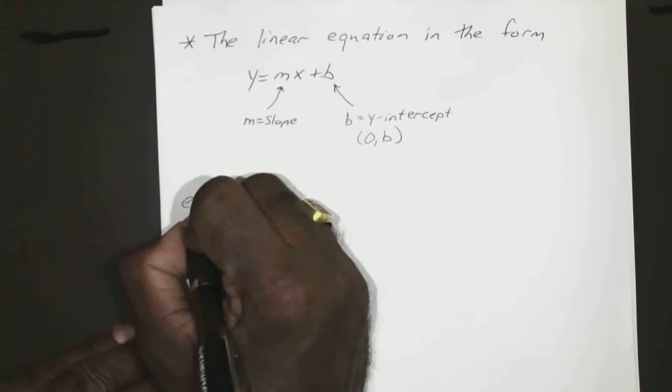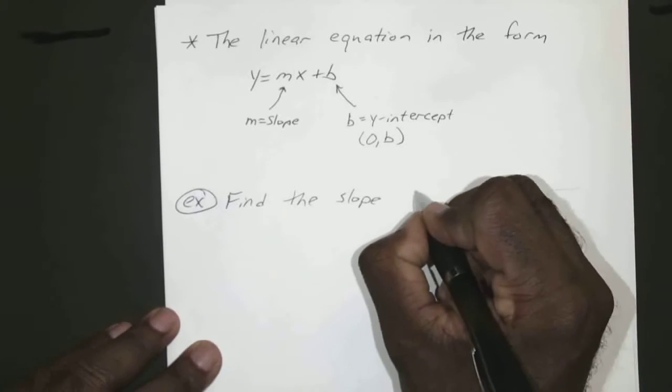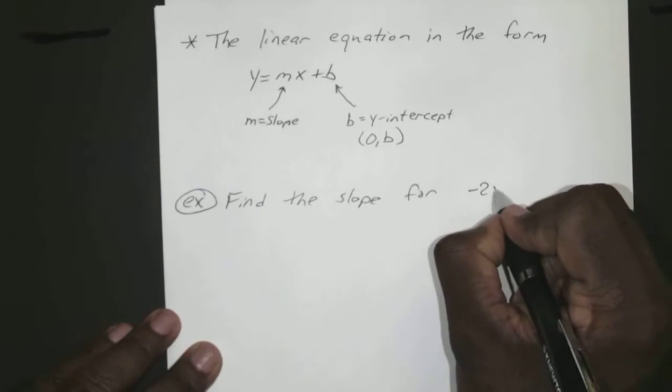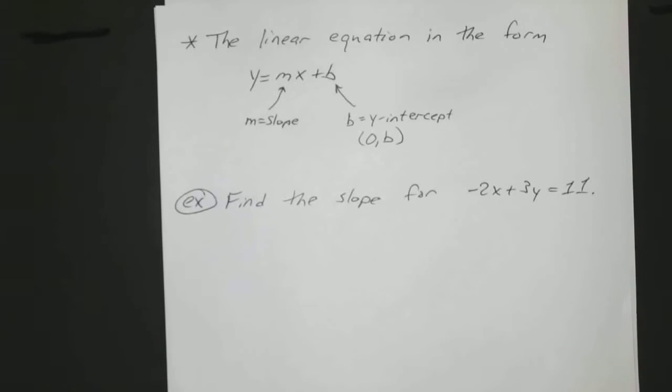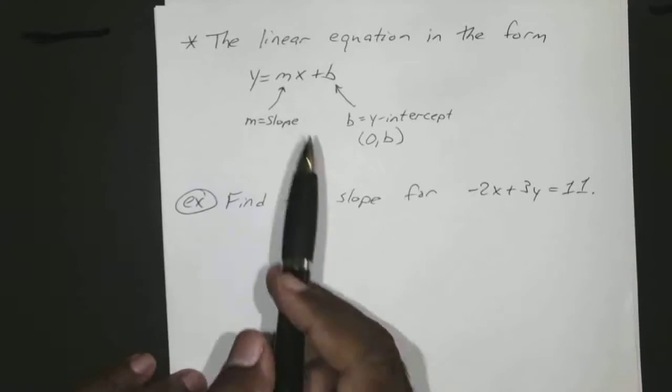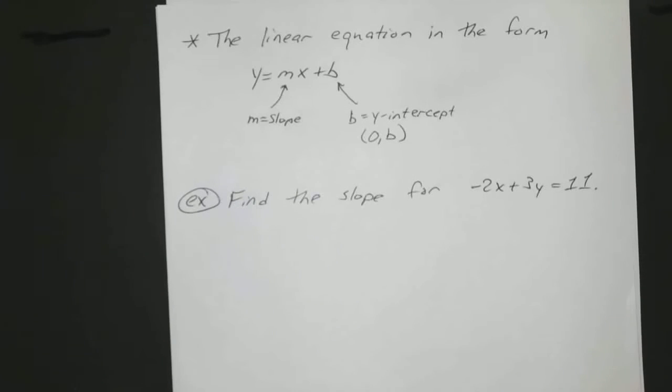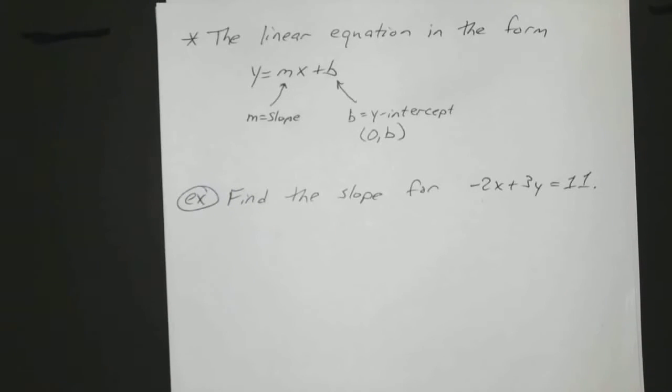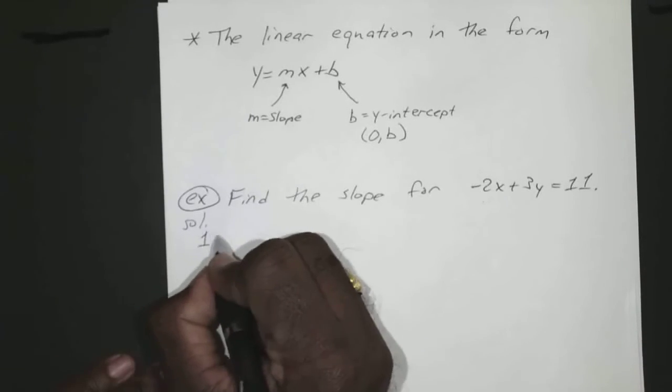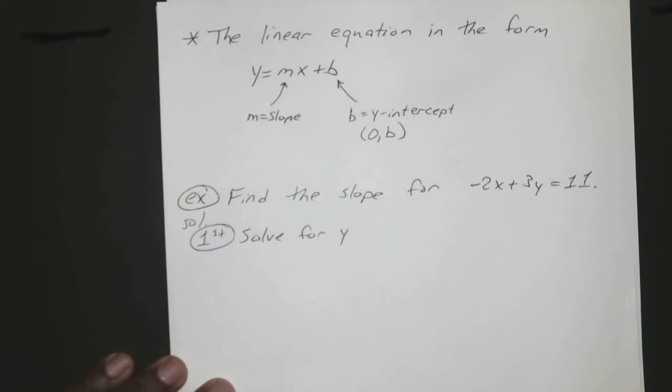Okay, so let's say for example if you wanted to find the slope for negative 2x plus 3y equals 11. Now we see here the slope is the value right next to your x, that coefficient. But the only thing is you have to make sure you solve for y first. So if you came and said the slope was negative 2, it would have been incorrect. You have to solve for y first, and then the value next to the x after you solve for y would be your slope. So first, solve for y.